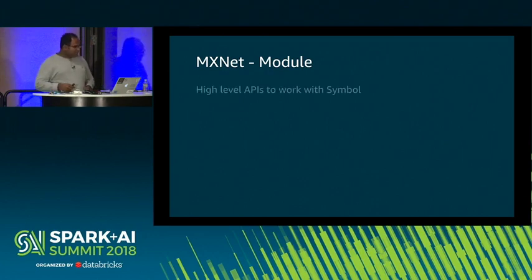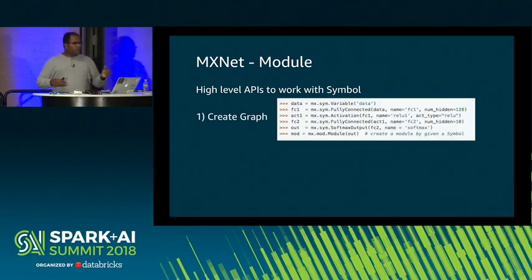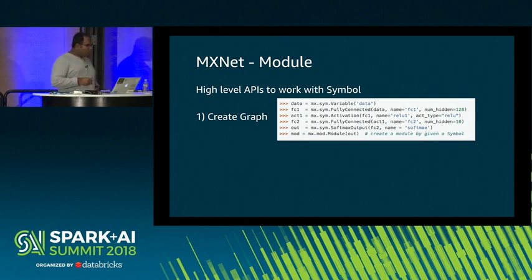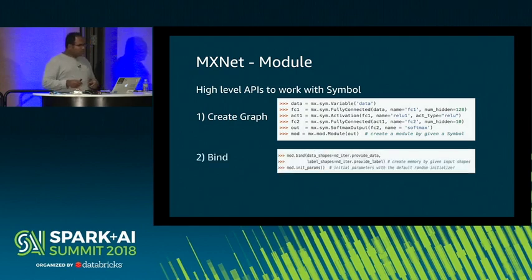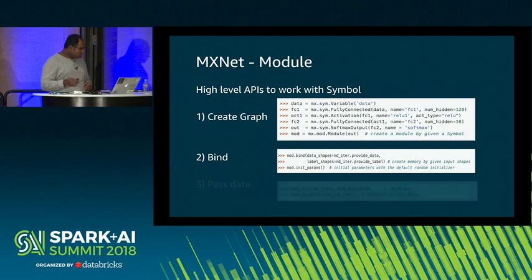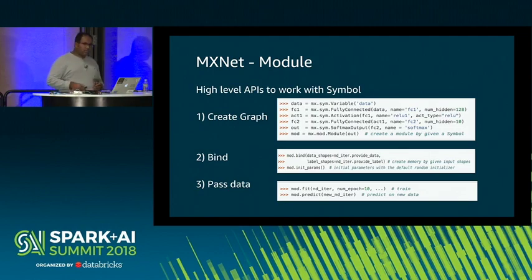Another set of APIs is Module — a high-level API to work with Symbol. You create a graph in Symbol first: in this network there are two fully connected layers with activation in between and a softmax layer. You feed it to the module and bind it with the input data shapes, at which point the engine allocates memory for your network. Finally, you pass data to either the fit routine to train your network, or to the predict routine to get predictions.